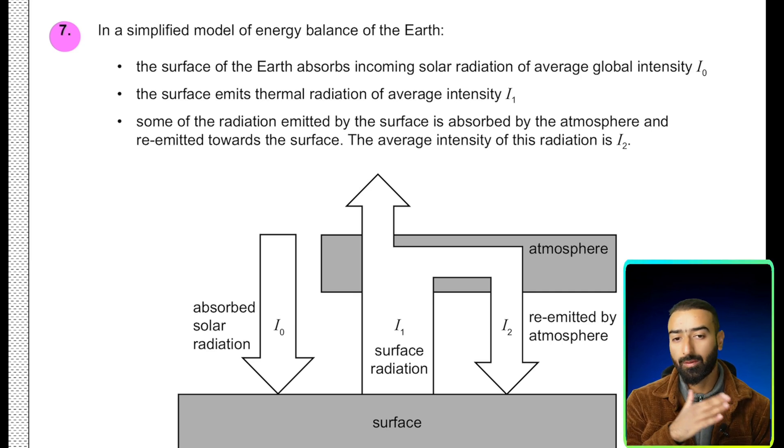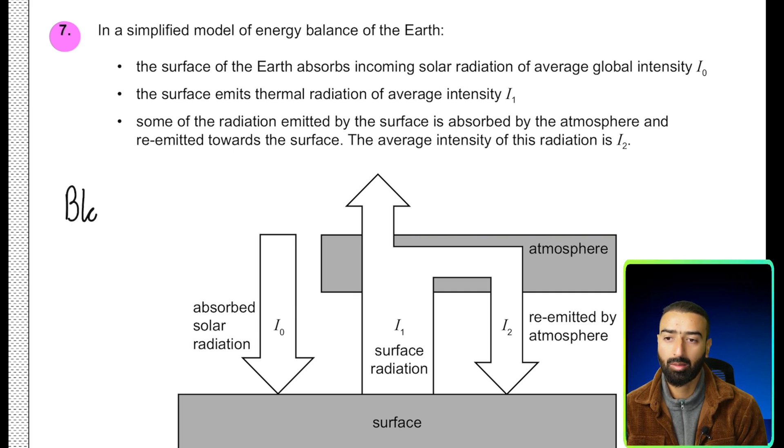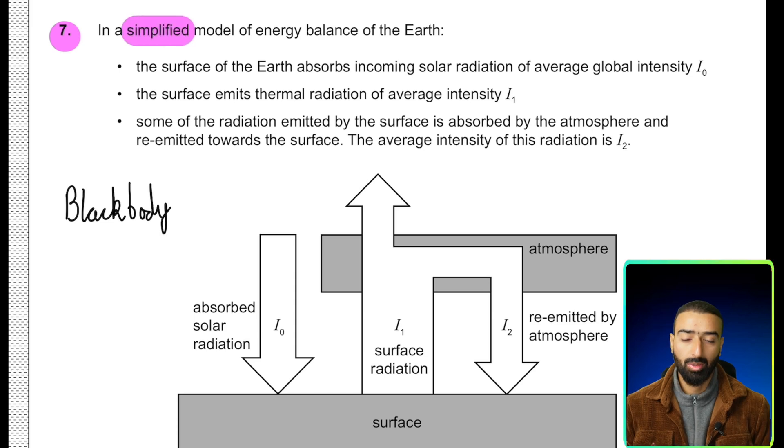So if there is no reflection of radiation, that means we can consider Earth to be a black body. And that's the simplification they have used. Because a black body absorbs all the radiation that it receives and then it re-emits it. There's no reflection in a black body.